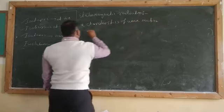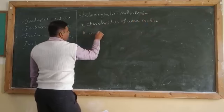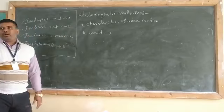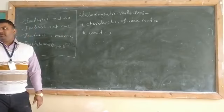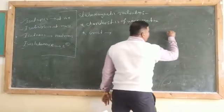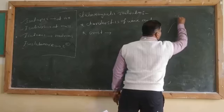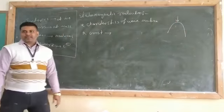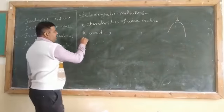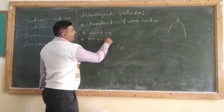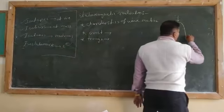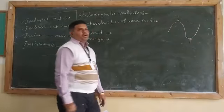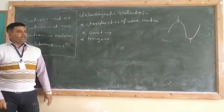What are the characteristics of wave motion? Number one: what is a crest? The crest is the upward displacement of a wave — whenever the wave goes upward, that particular part is called the crest. Then, what is a trough? The trough means the downward displacement — the downward displacement of a wave is called the trough.